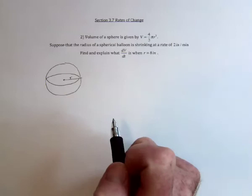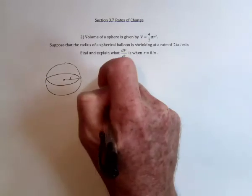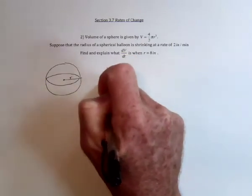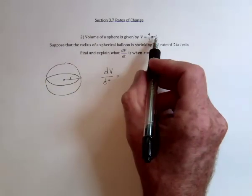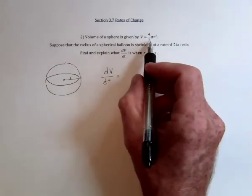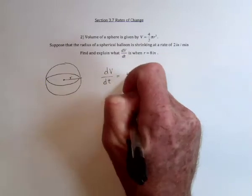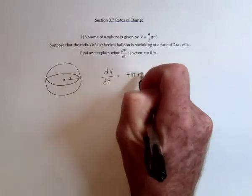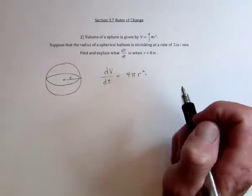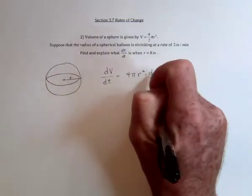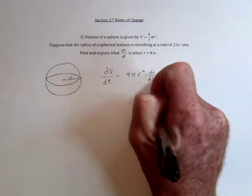So we use implicit differentiation. So on the left hand side we've got dV/dt, take the derivative over here to get 3, brought down in front it's going to cancel that 3, it'll just have 4π r², and now take the derivative of r with respect to t.